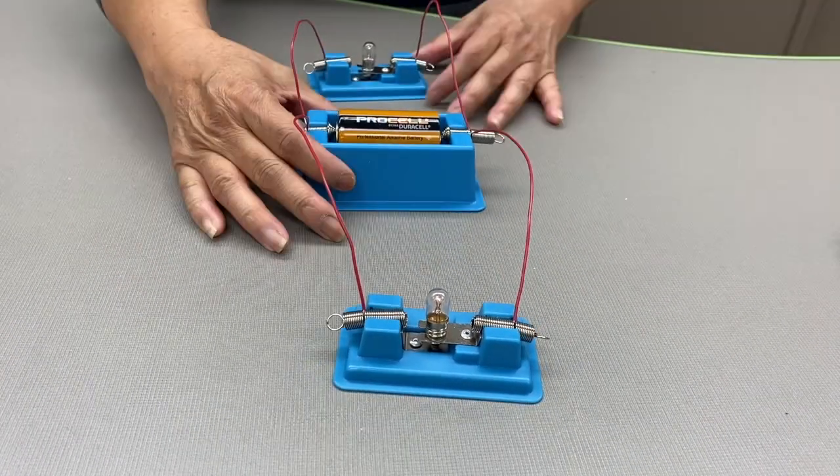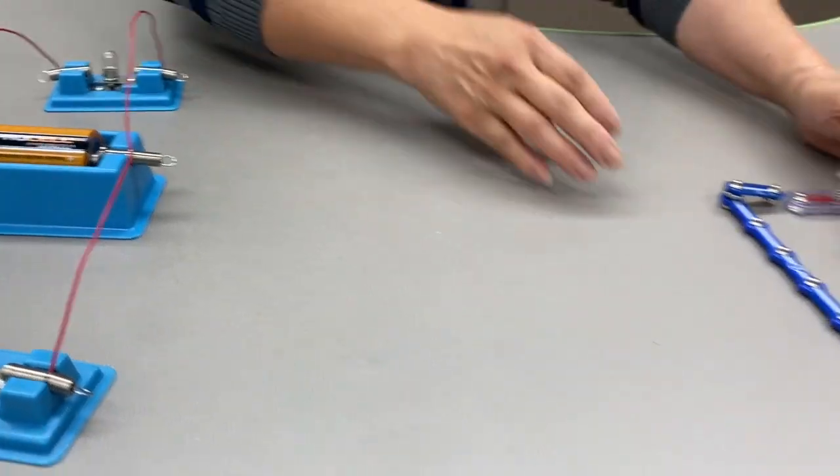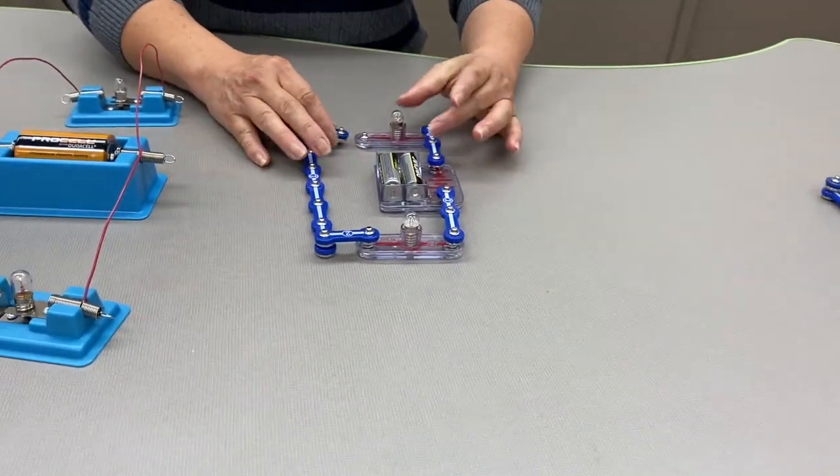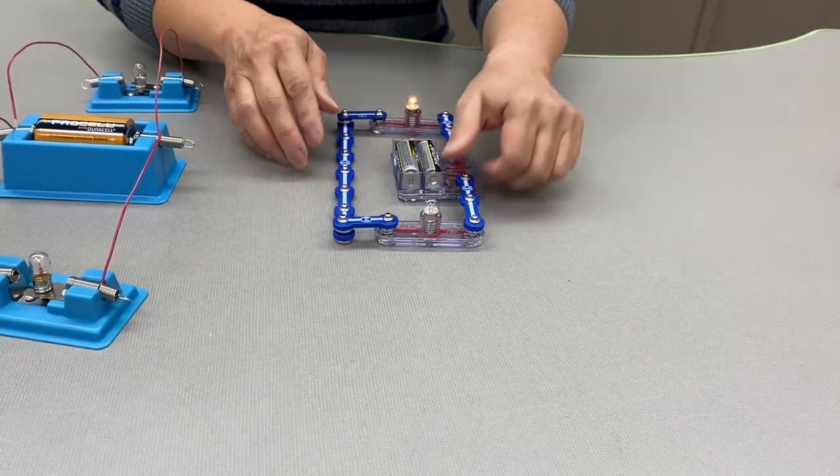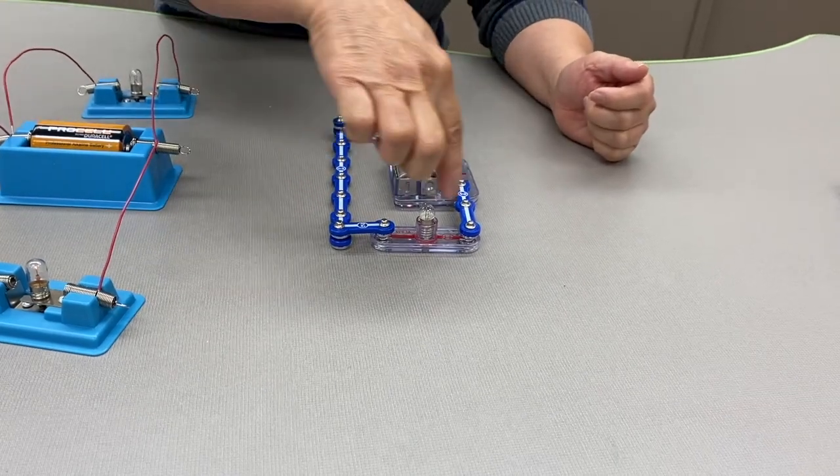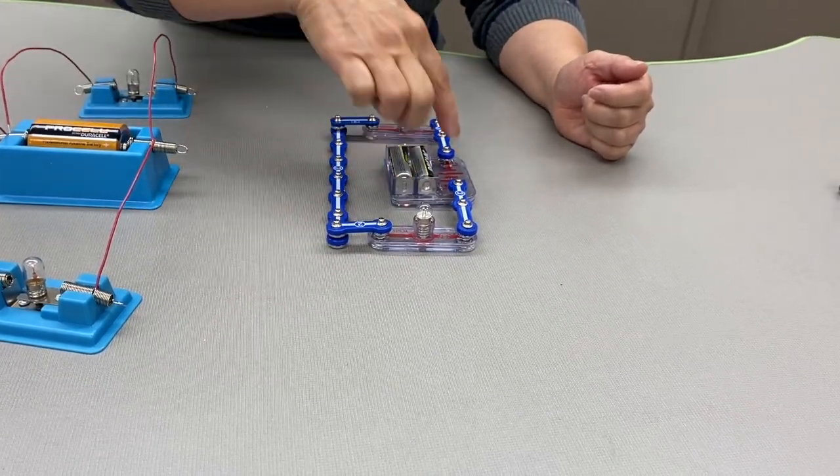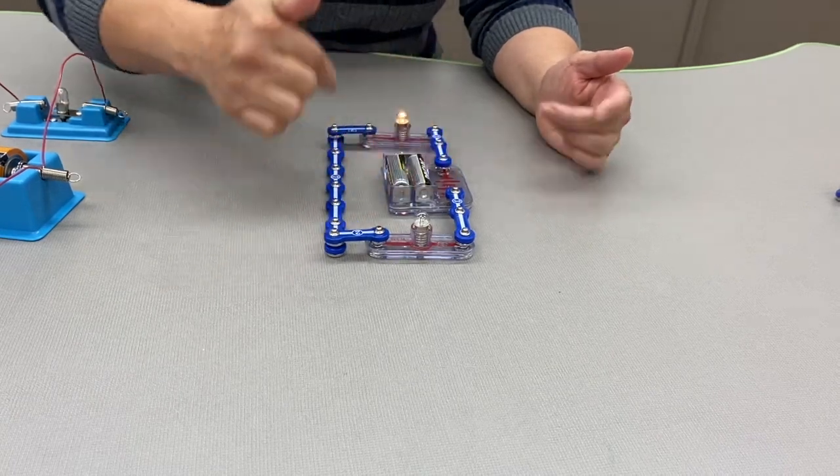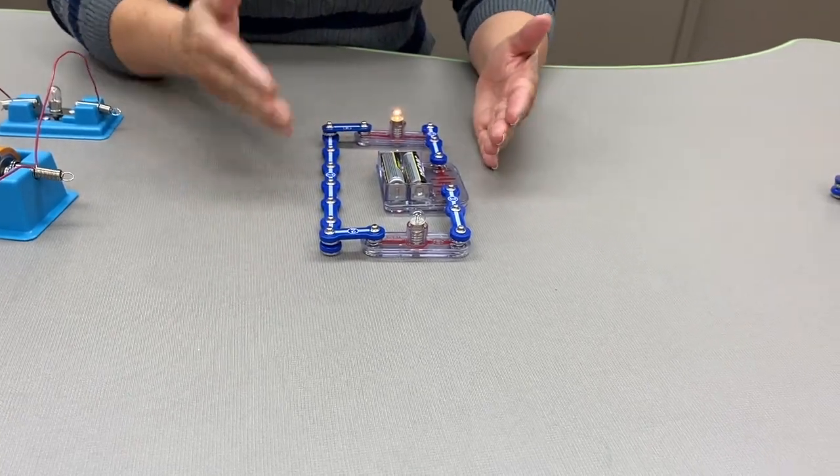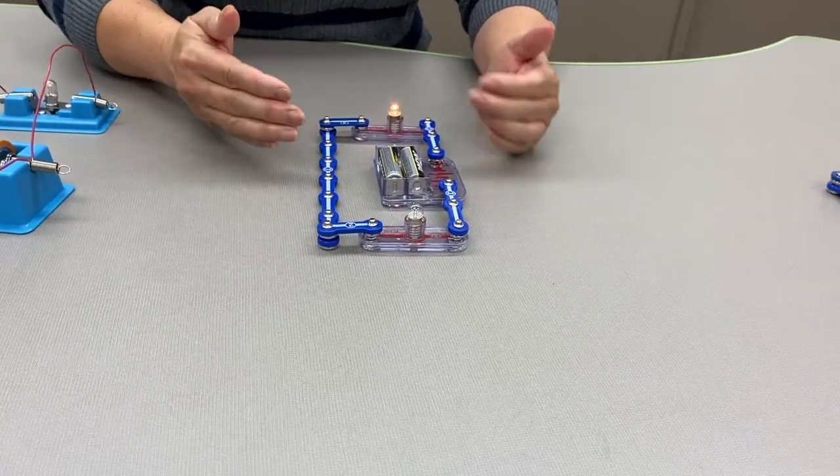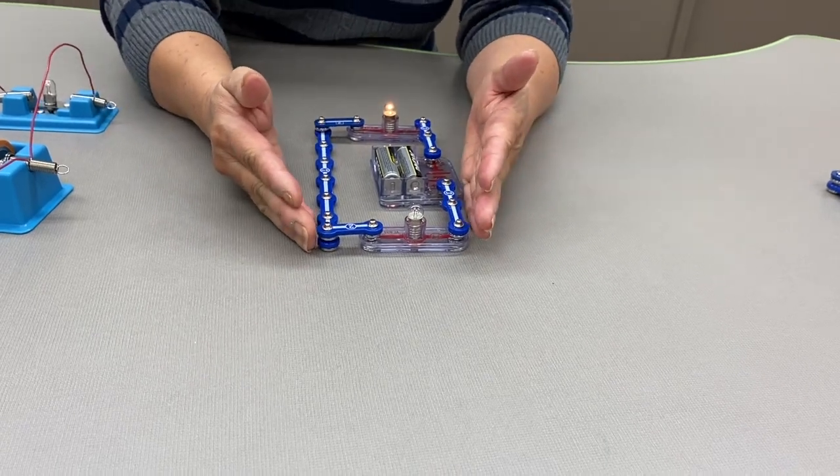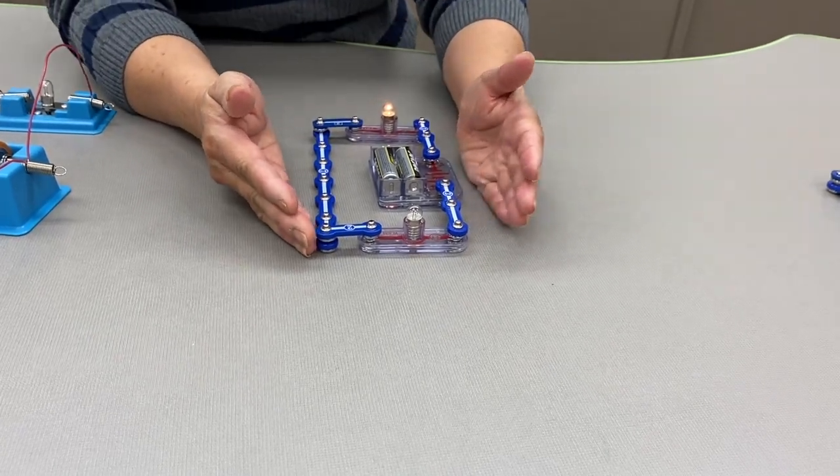So how does this work? Here, let's use our snap circuits for an example. When a current goes in a series, there's just only a limited amount of electricity to go through both bulbs. In this example, one bulb is lit brightly and the other one is barely lit at all.